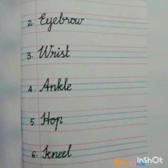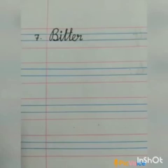Sixth dictation word is Kneel. Kneel means to fold both knees and sit or go down on the ground. Spell: K-N-E-E-L. Kneel. Students, on the other side of the page, if there is no space or lines, start on the next page. Draw a side line if needed.